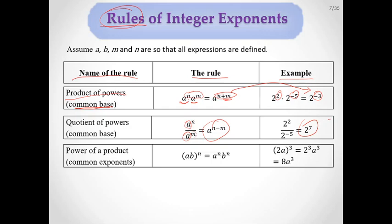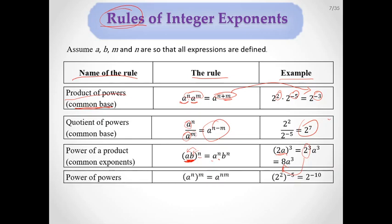Another rule is the power of a product: (A times B) to the N equals A to the N times B to the N. For example, (2A) cubed equals 2 cubed times A cubed, and 2 cubed makes 8, so the answer is 8A cubed. Also, the power of a power rule: (A to the M) to the N equals A to the M times N. For example, (2 squared) to the negative 5th equals 2 to the 2 times negative 5, which is 2 to the negative 10th.